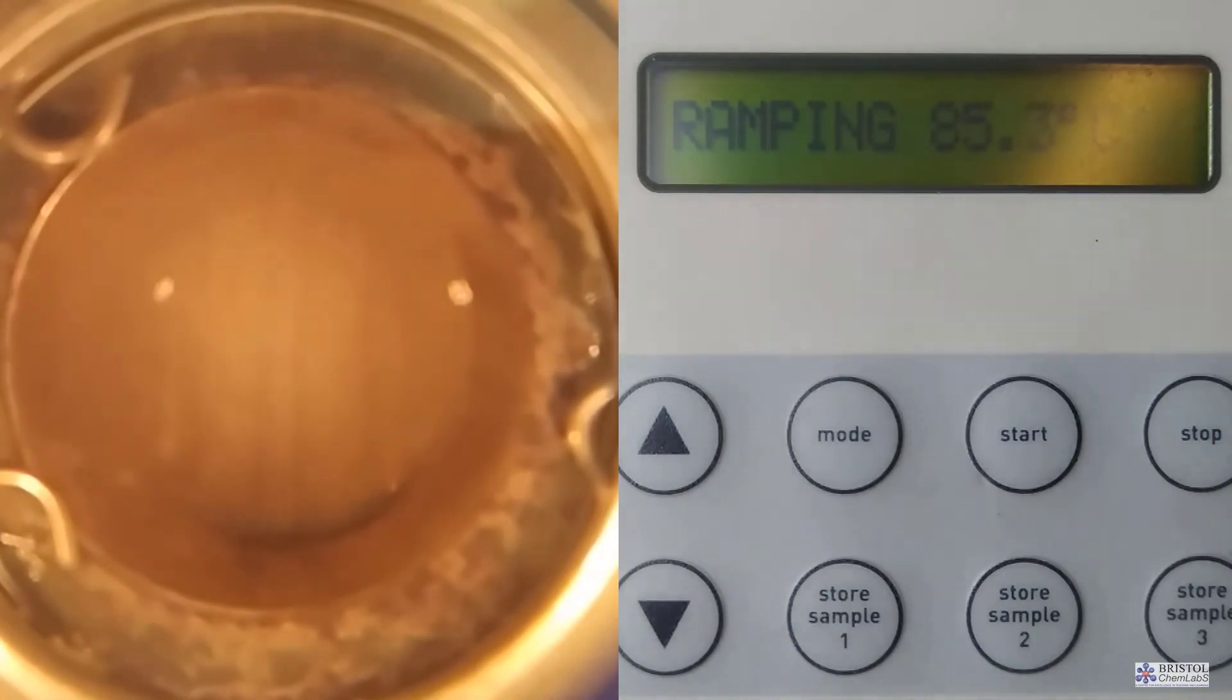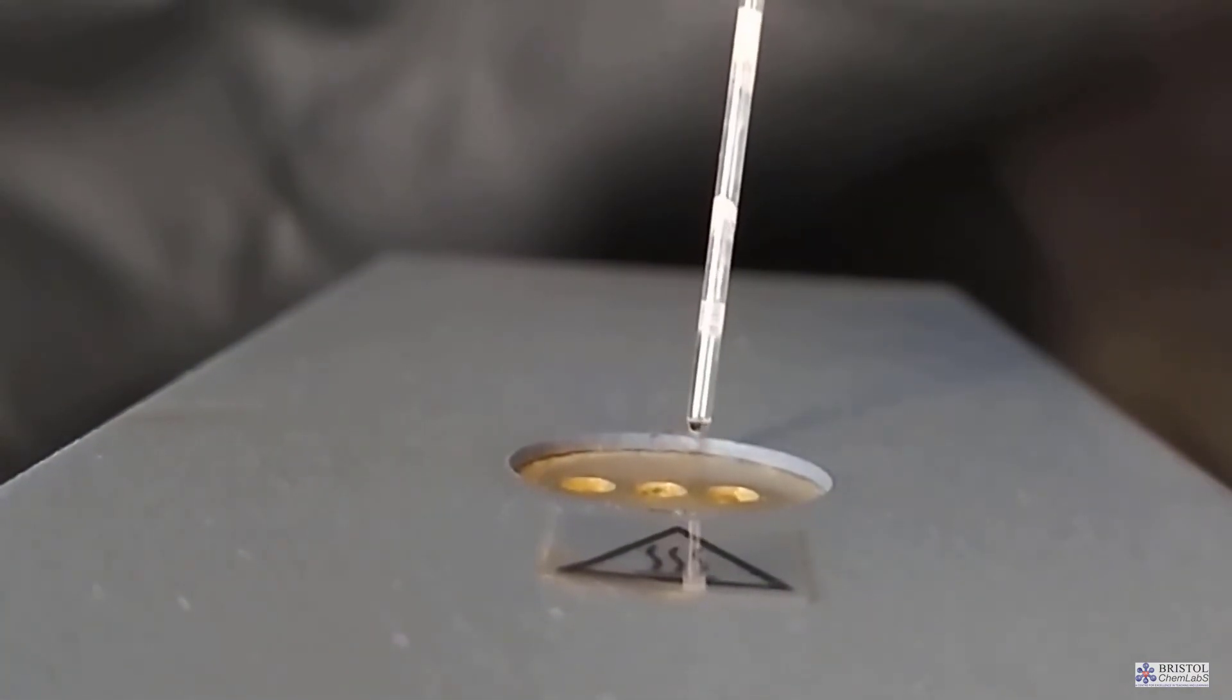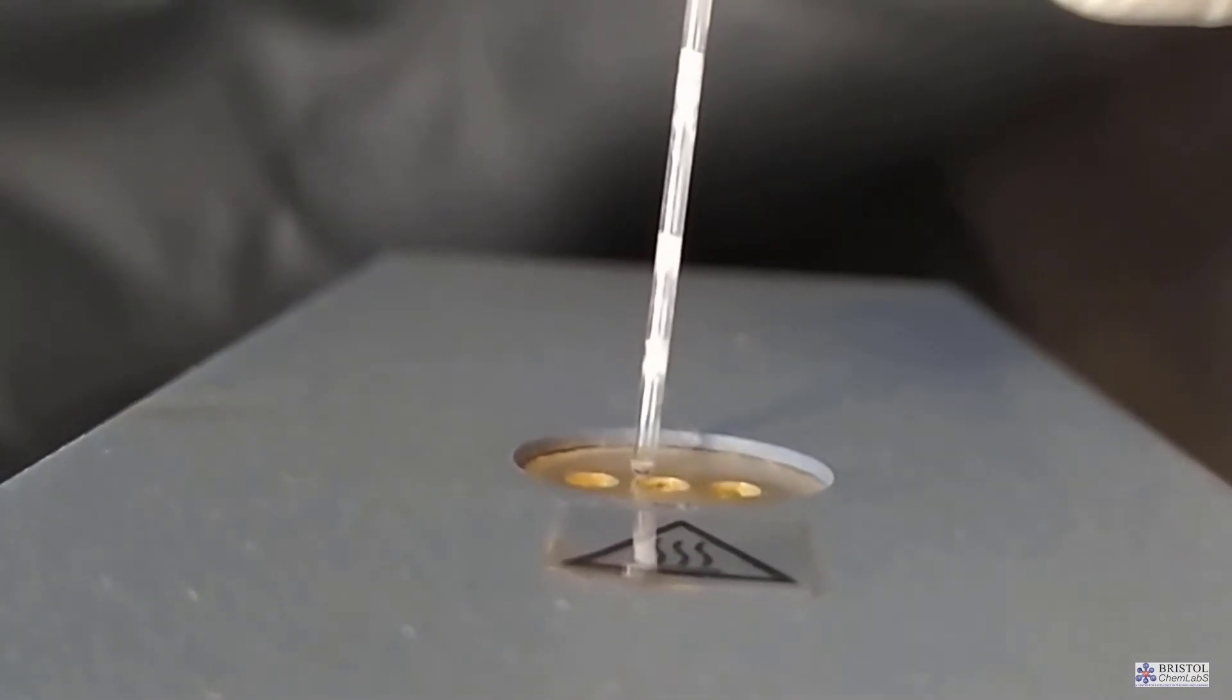One simply looks through the lens through the window of the apparatus and judges when the solid becomes liquid and makes a note of the melting point. Used capillary tubes are considered sharps and should be disposed of in a sharps waste bucket or bin.